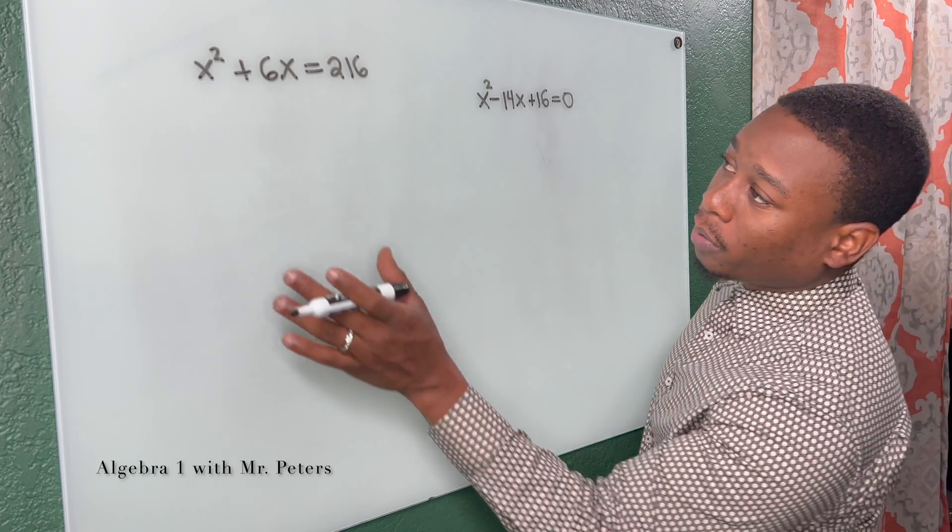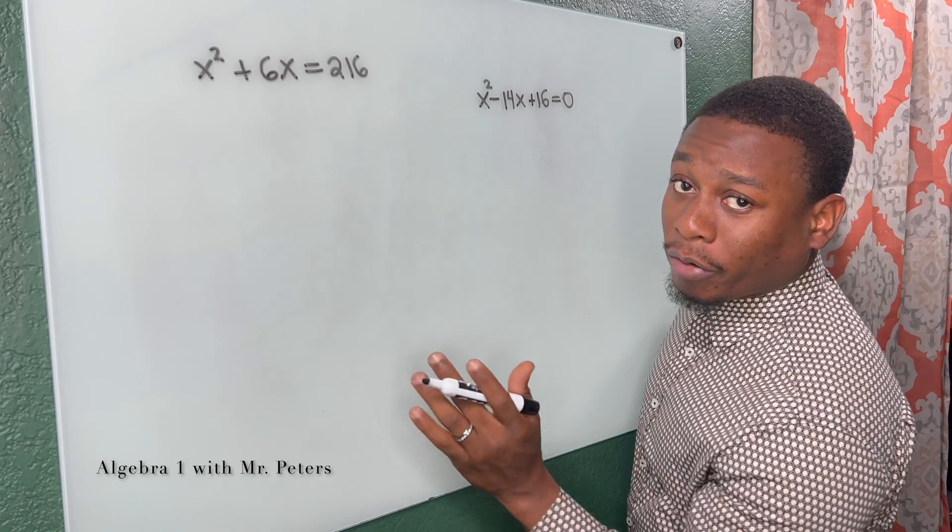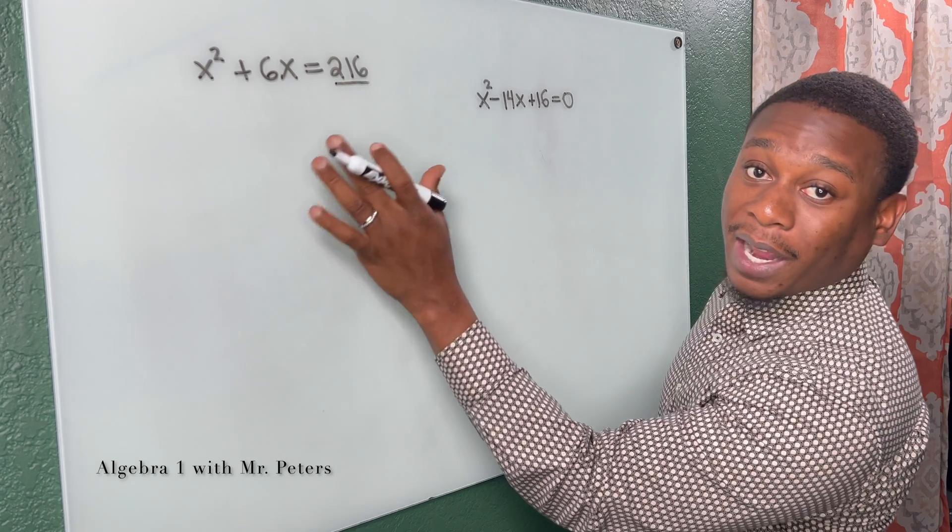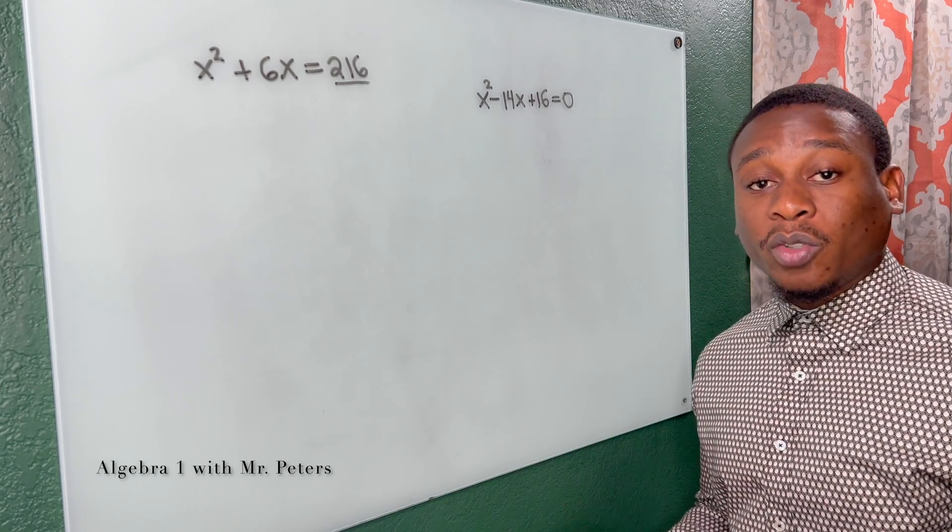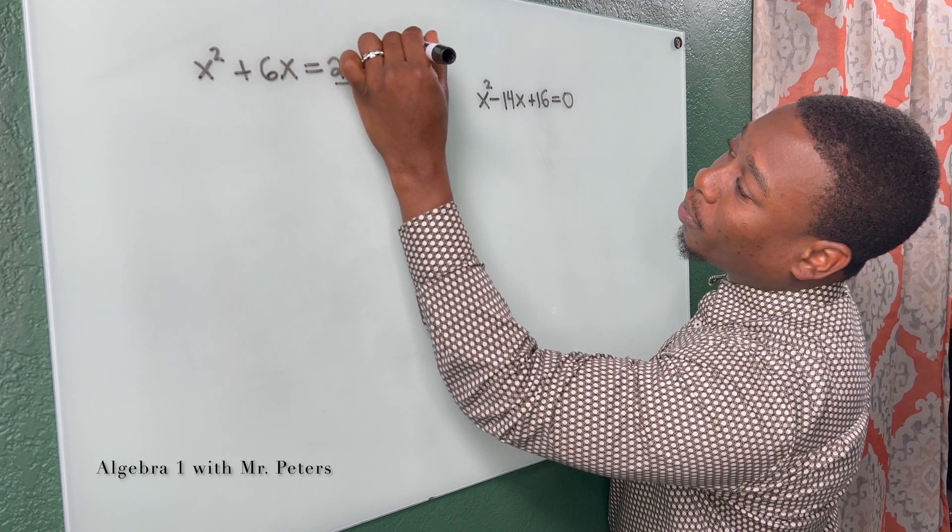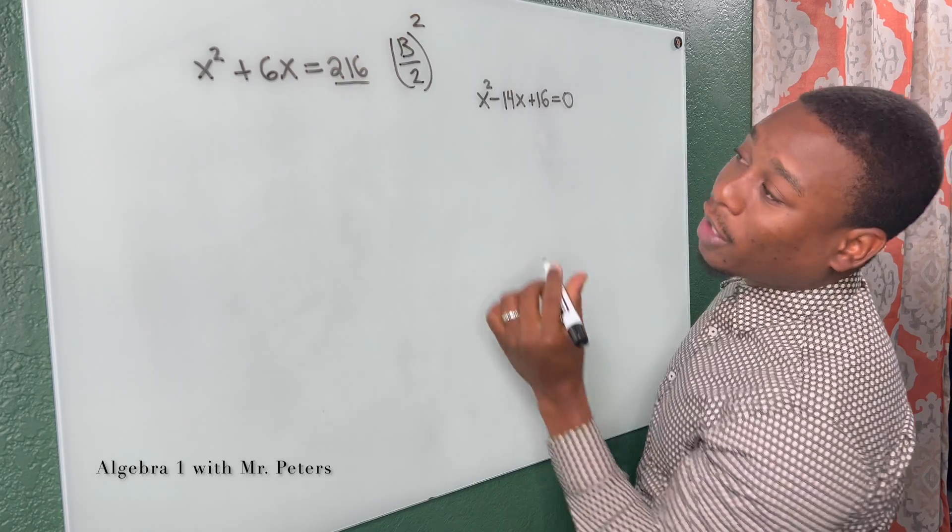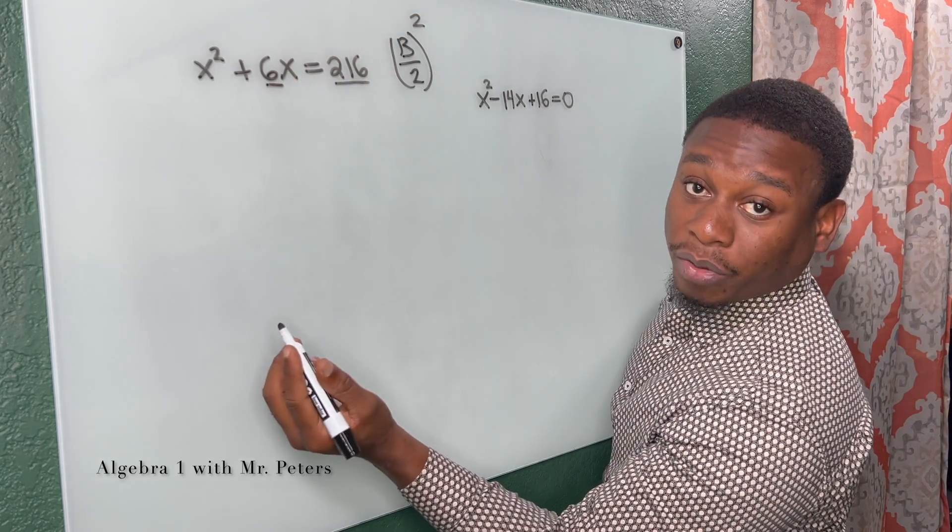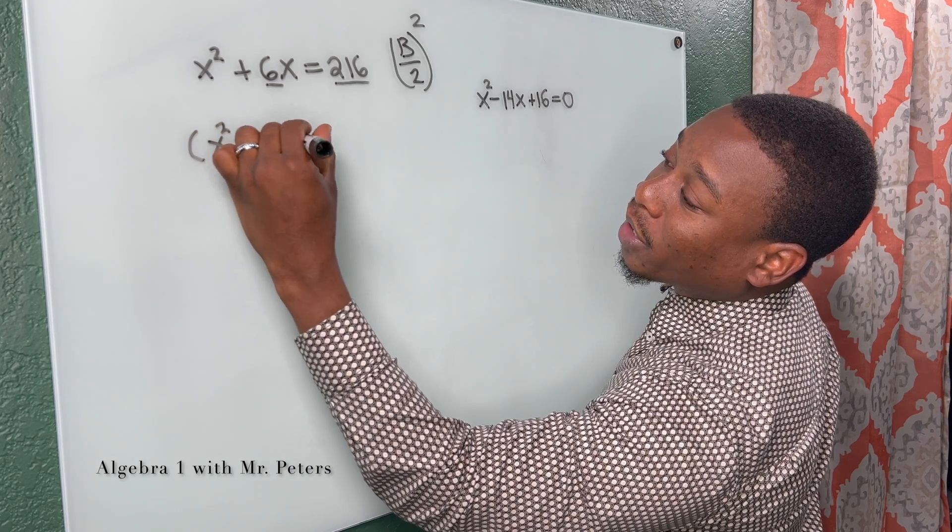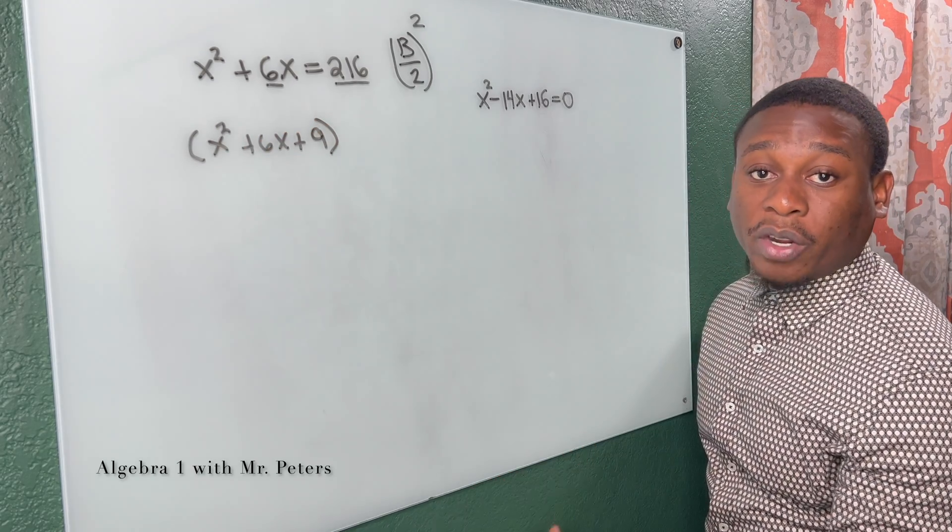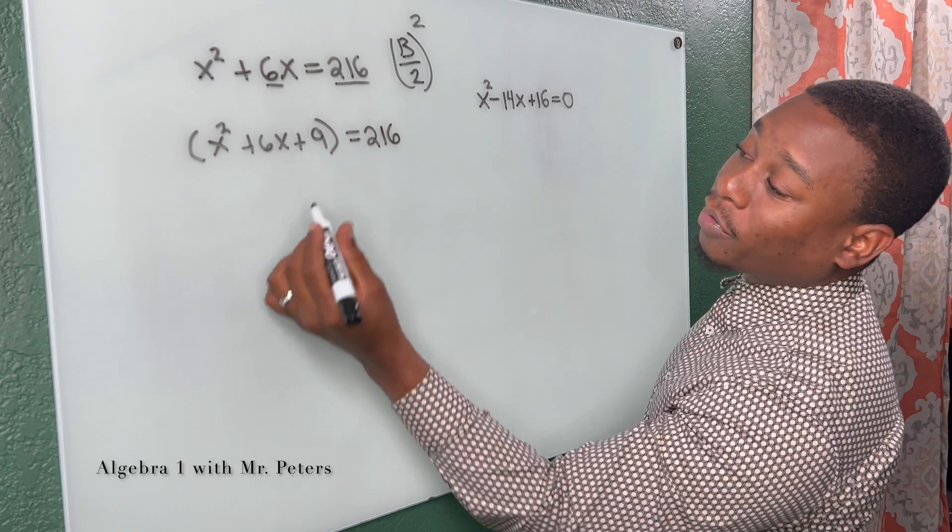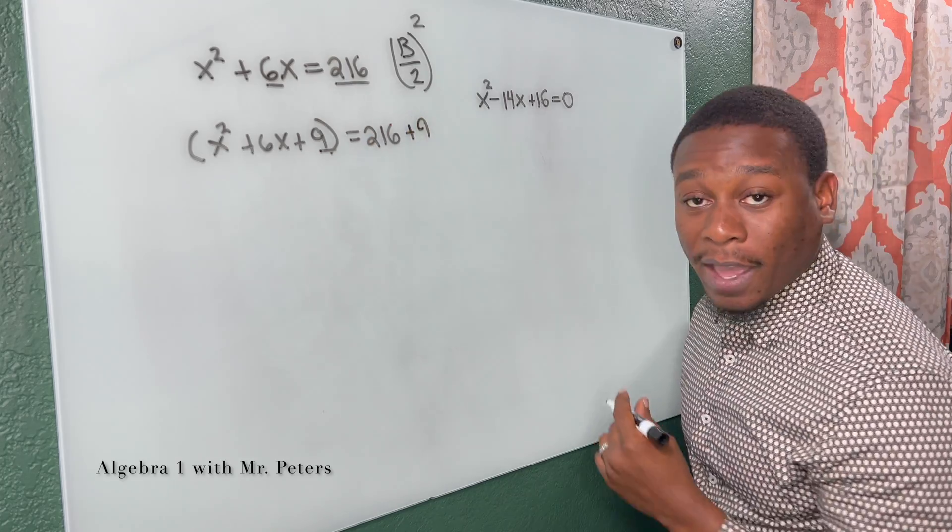So just remember, this is a situation where we can't use regular factoring, meaning that there's nothing that I can multiply to get 216 that adds to give me 6. So what we want to do is create a perfect square trinomial. And the way we do that is we take the B term divided by 2 and square. So 6 divided by 2 is 3. 3 squared is 9. So I know here x squared plus 6x plus 9. That is the perfect square trinomial we need to solve this problem. And what I do on one side, I have to do to the other. So I added 9 there. I have to add 9 there.